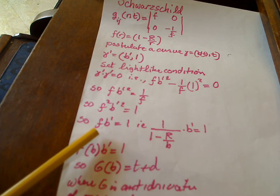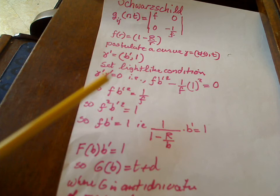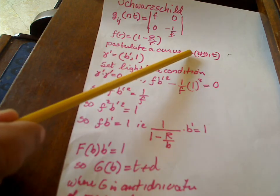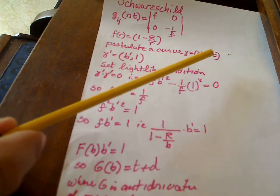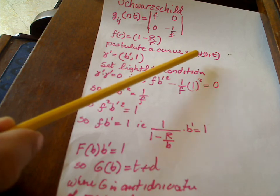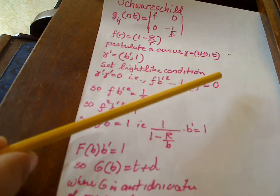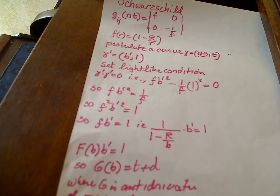But this f is f(r), but the r is really the b, because in this curve the b plays the role of r and the t—I could have used another letter for t here—but the b plays the role of r and the t plays the role of t.